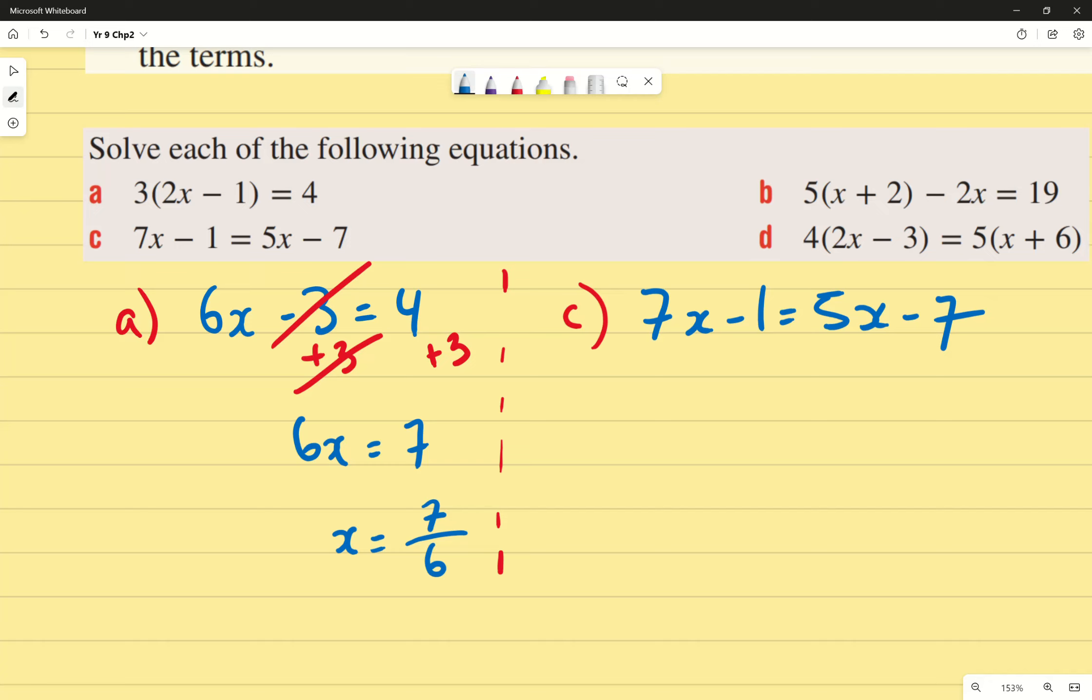Now, if I was to ignore the fact that there was an x and just focus on the fact that there's a 7 and a 5, I would just subtract 5 or subtract 7. So I'm going to do this very similar idea. I'm going to subtract, let's say I'm going to subtract 5x and I'm just doing that to get rid of one of them. I'm going to subtract 5x on this side and also do it to this side. What is 7x minus 5x? 2x. 2x, thank you very much. 2x.